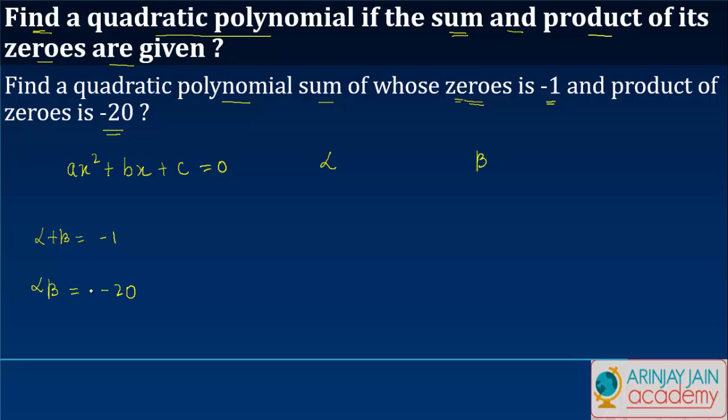But one thing that we know is that the sum of the two zeros is equal to minus b upon a and also the product of the two zeros is equal to c upon a.